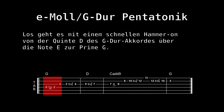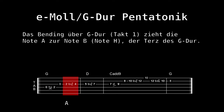Spiele einen Hammer-On von der offenen D-Seite, der Quinte des G-Dur, zum Ton E, und schlage dann die leere G-Seite an. Das Bending zieht die Note A zur Note B, der Terz des G-Dur Dreiklangs.